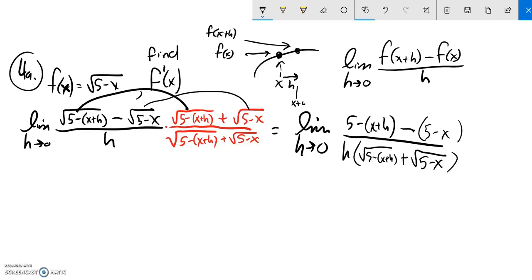So let me clean up this numerator a little bit. I'll just kind of do a little bit of scratch work above it. I distribute that in. So I get 5 minus x minus h. Distribute that in. Minus 5 plus x. And what's nice is 5 minus 5 is 0. Negative x plus x is 0.